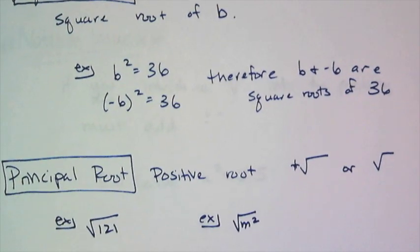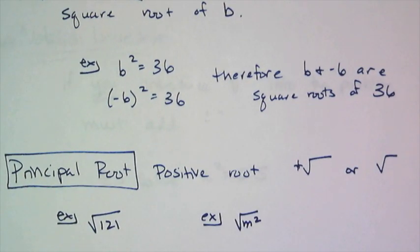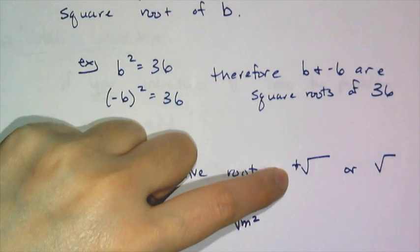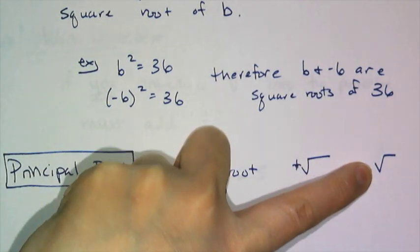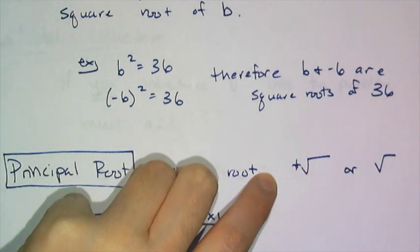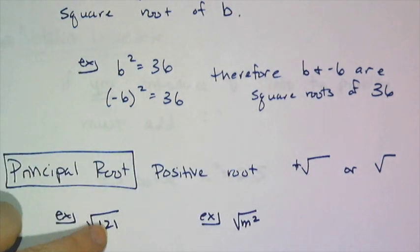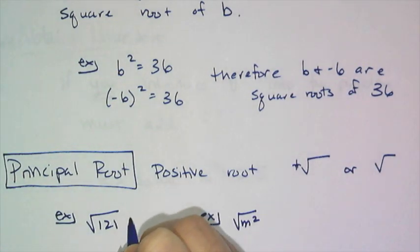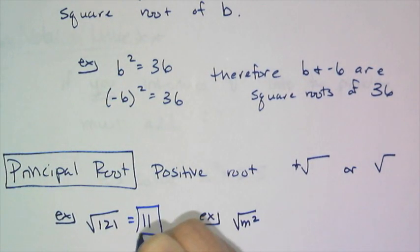That's the word we use for the positive version. And you'll know you need the positive root when you either see a plus sign in front of it or no sign at all. That's an indication that I want the positive root. So if you see the square root of 121, I'm telling you I want the positive version of the square root of 121, which is just 11.